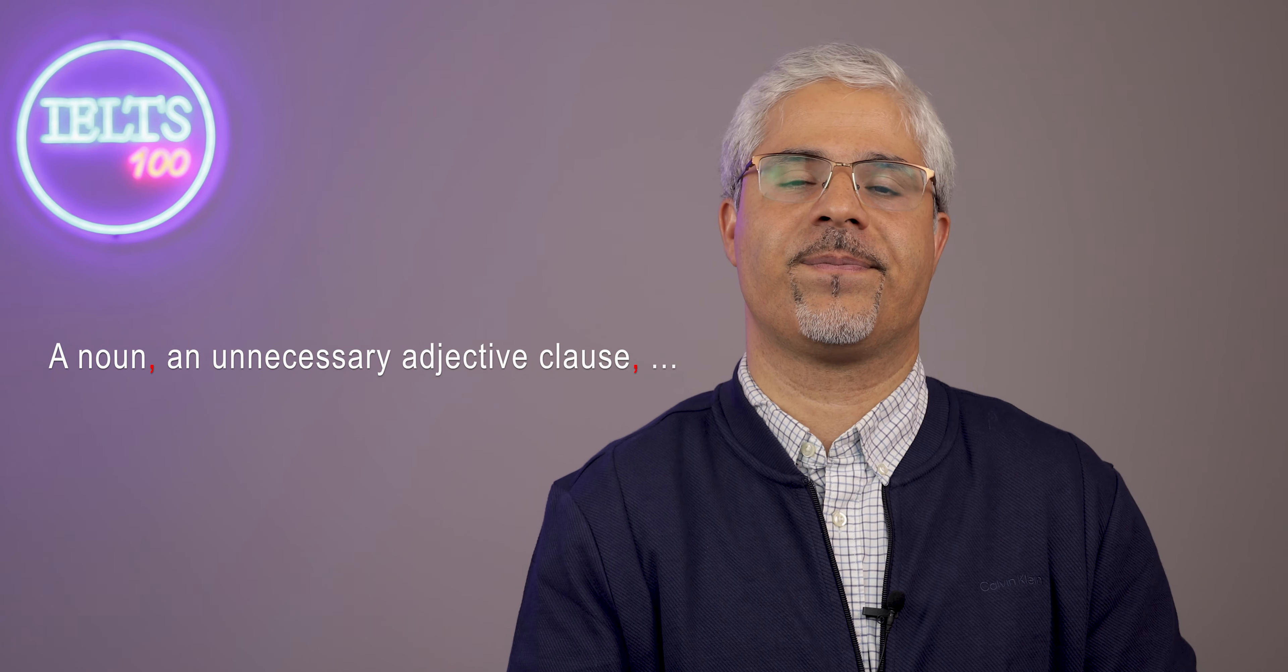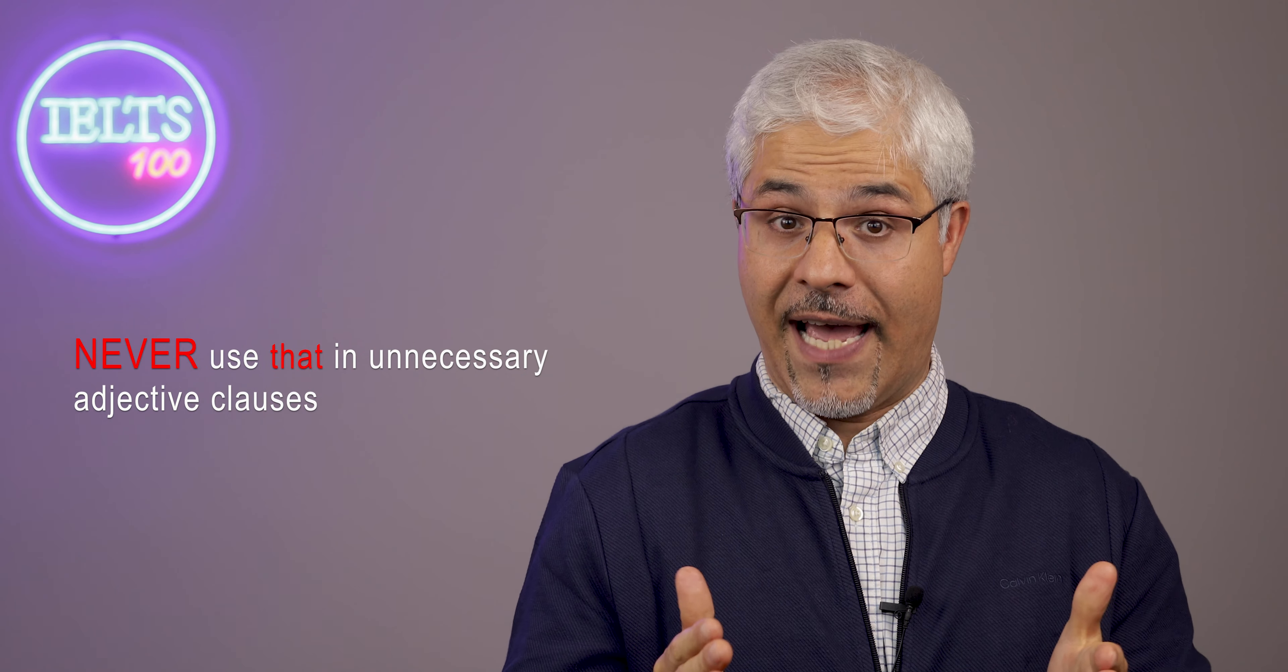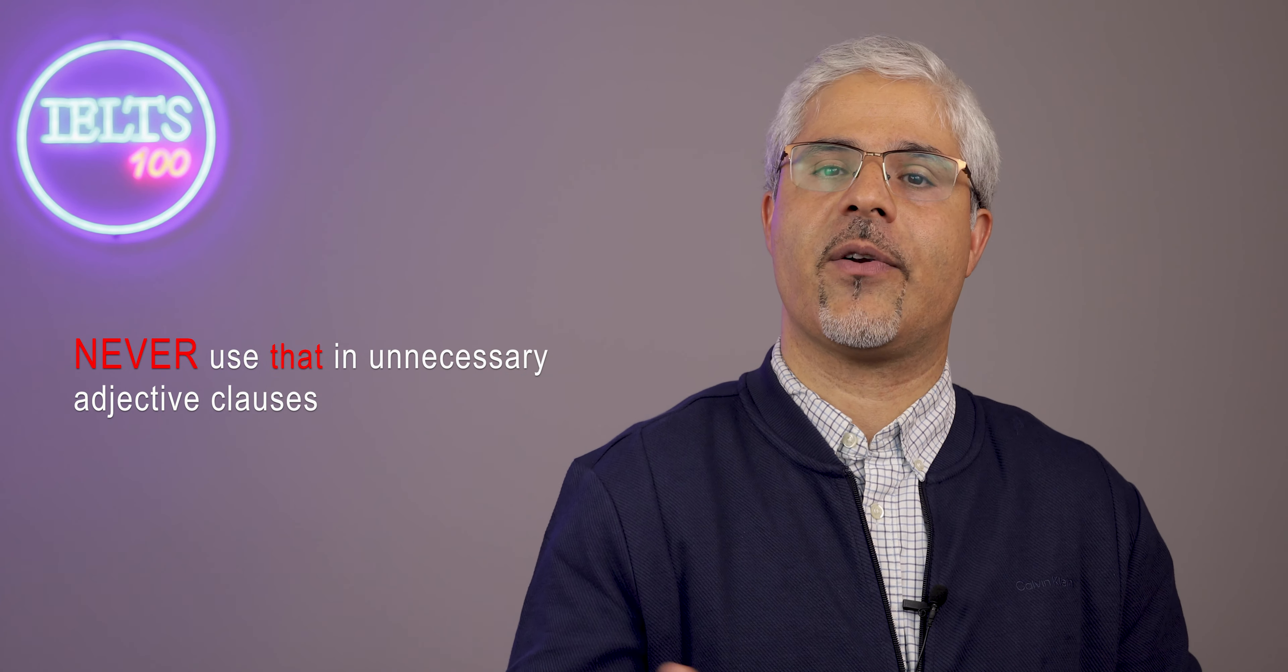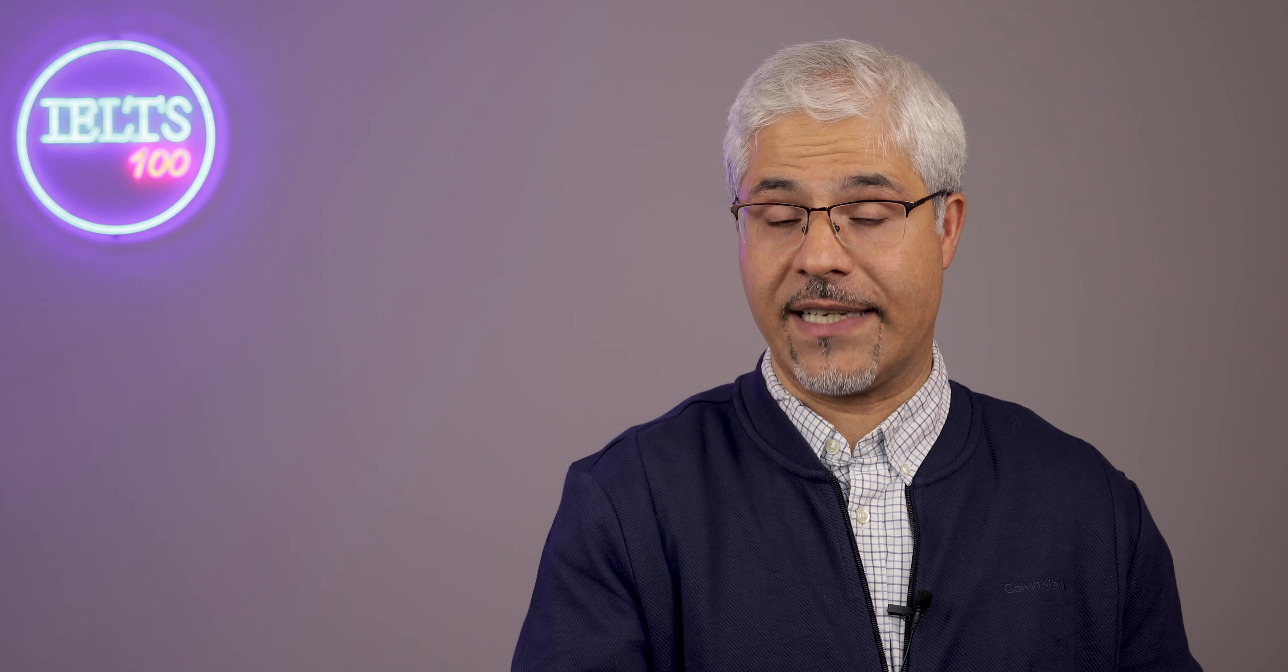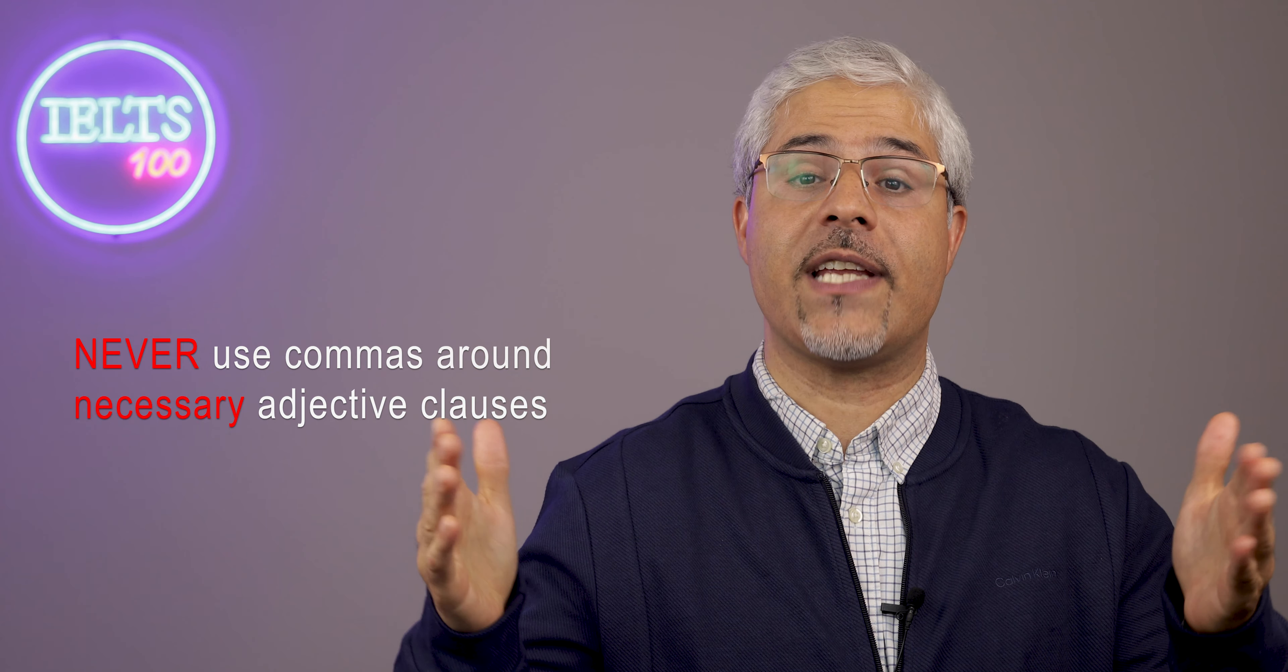When an adjective clause is unnecessary to identify the noun that goes before it, it must be surrounded by two commas. Also, you can never use 'that' in unnecessary adjective clauses. However, in necessary adjective clauses, we tend to use 'that', and we can never use two commas around the adjective clause.